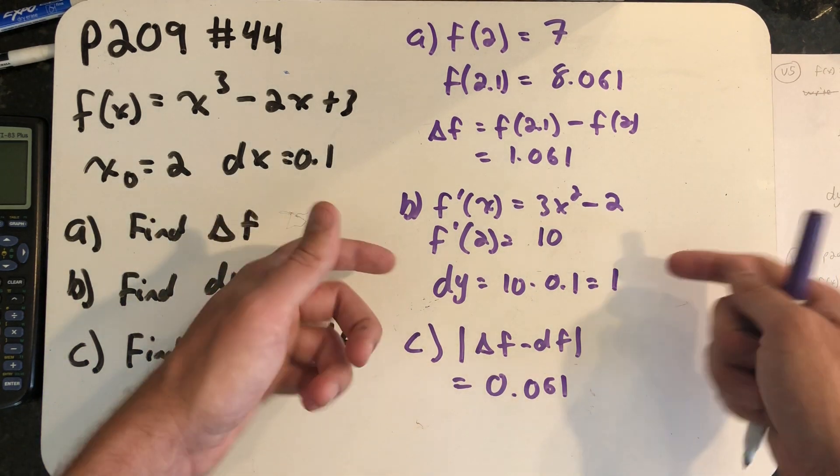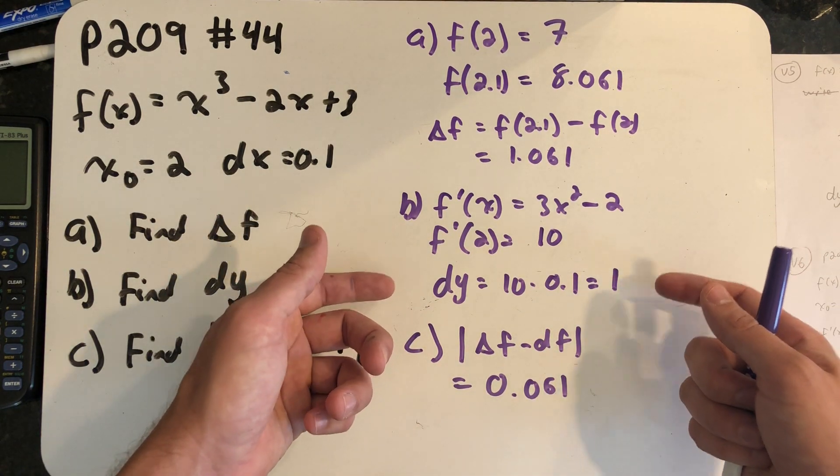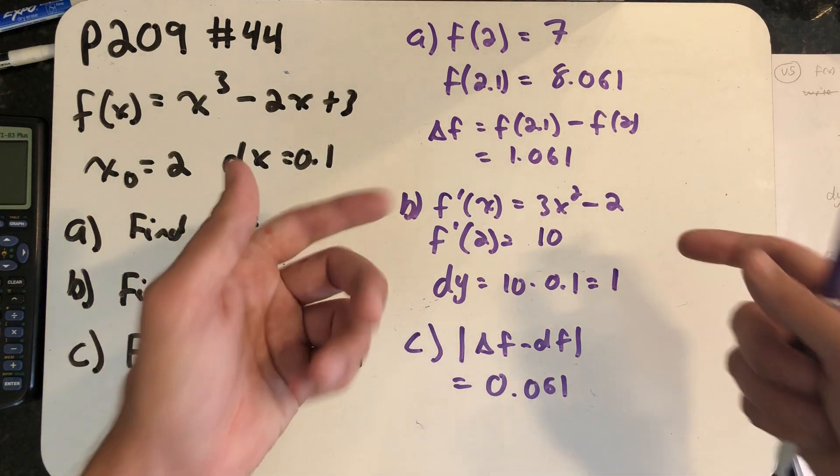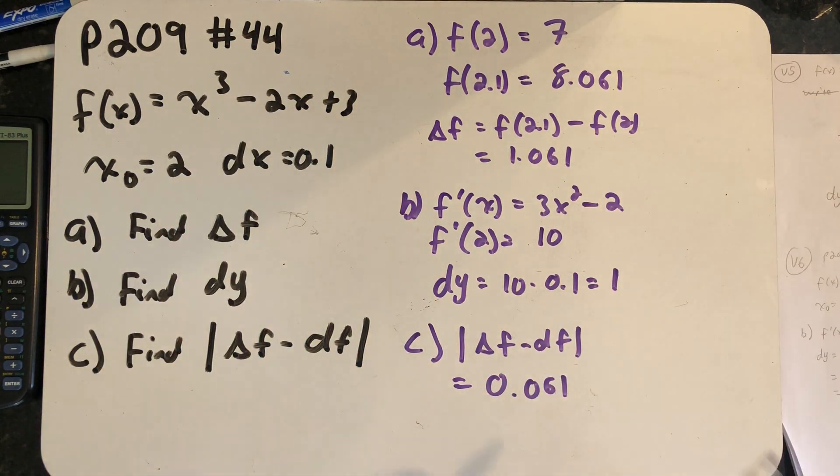The differential is doing a good job of approximating not the error but the change in the function. More importantly, it's telling us the linearization is doing a good job of standing in place of the function. That if we wanted to look at a very small interval on the x-axis, we could use the linearization, the standard linear approximation, in place of the function.